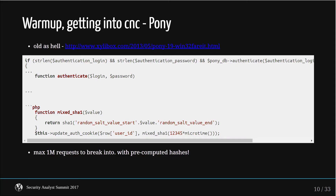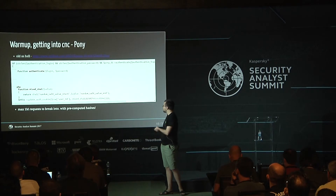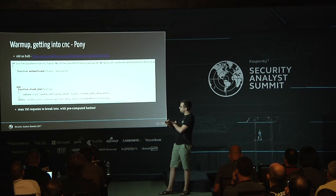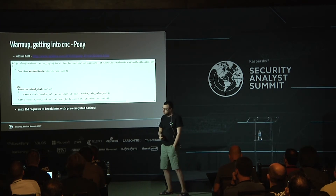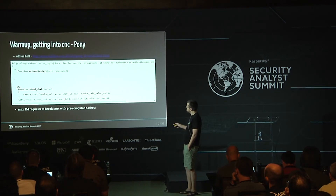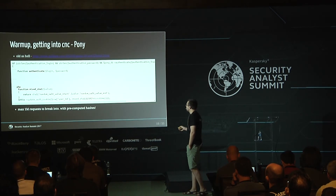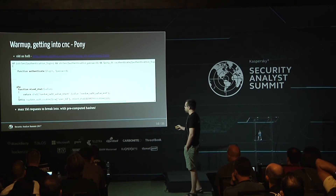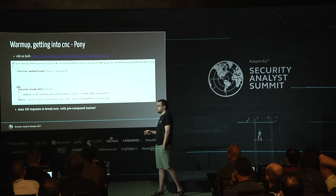Basically, you try to go to the Pony panel and authenticate to get the stolen data. You don't want to type your password every time, so there's a cookie that remembers you're authenticated. The way it works: it creates a random salt value — supposed to be random, not a constant string — and a SHA1 hash is calculated from it. The funny thing is they use PHP's microtime function, which gives you a number of seconds and microseconds. That's kind of constant; you can calculate it offline on your own computer.